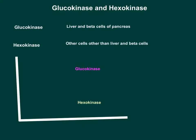Now, why do we have two enzymes to do the same function? To understand that, we need to know where glucokinase and hexokinase are located. Glucokinase is located in the liver and beta cells of the pancreas, whereas hexokinase is located in other cells — other than the liver and beta cells of the pancreas.